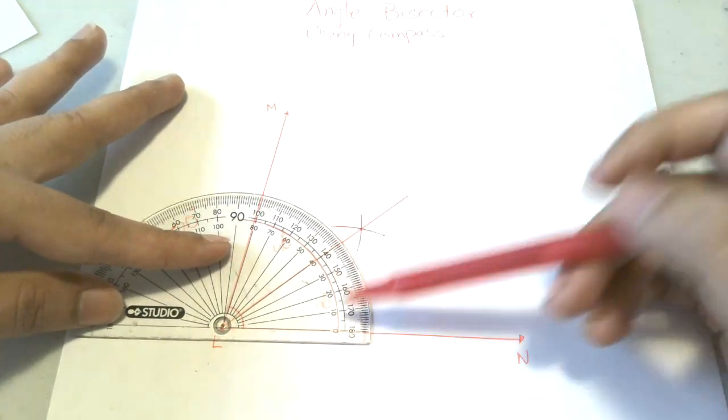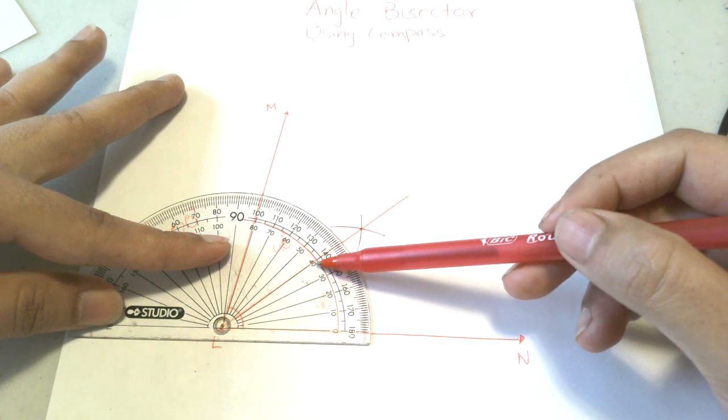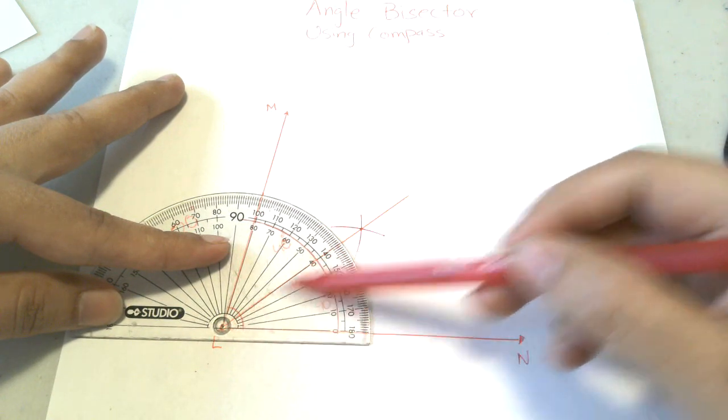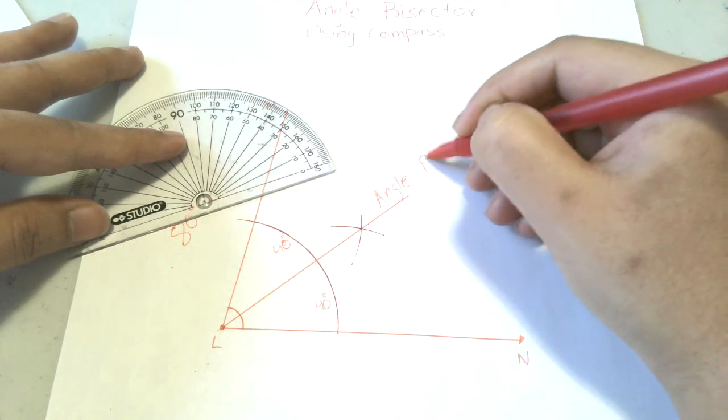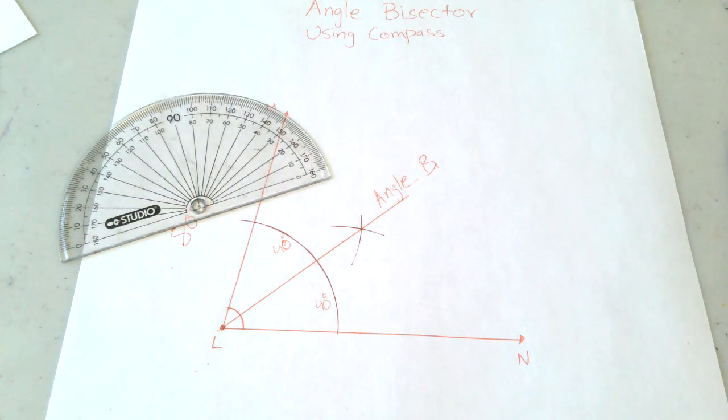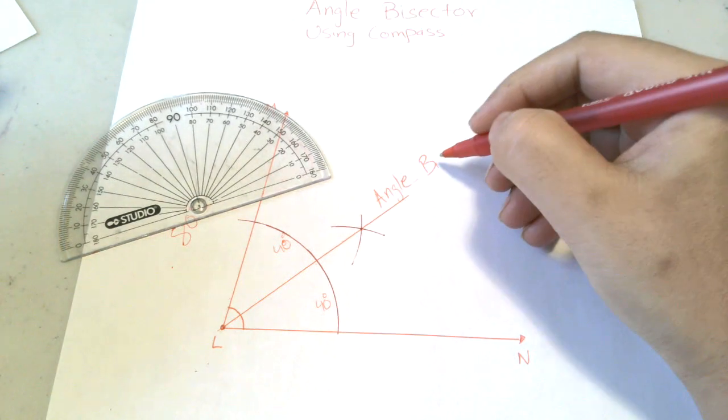And you can see the bisector is right on 40 degrees. So this is the angle bisector.